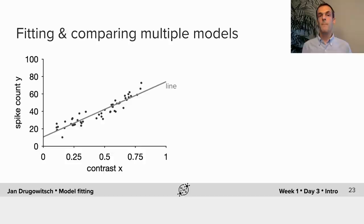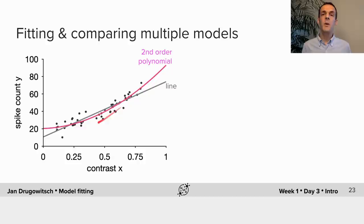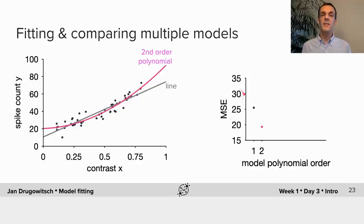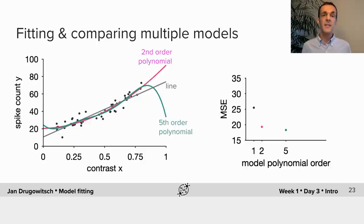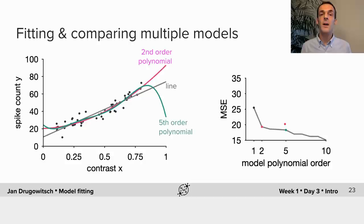Another way to assess the quality of model fits is by comparing them across different models. So far we've focused on using a line to fit the relationship between contrasts and spike counts, but for particularly low and high contrasts many data points come to lie above the line. Could a quadratic fit, shown here by the purple line, give us a better description? Indeed, if we measure the quality of fits by the mean squared error, this error decreases if we move from a line to a second order polynomial. And if we use an even more complex model — say a fifth order polynomial — the error decreases even further. In fact, as we continue to higher order polynomials the mean squared error consistently decreases with increasing polynomial order.